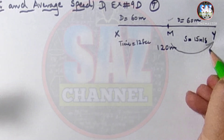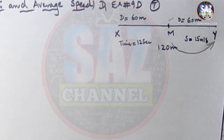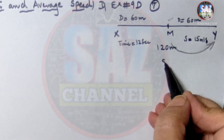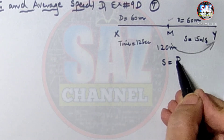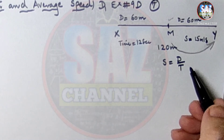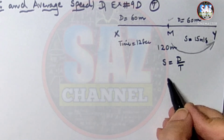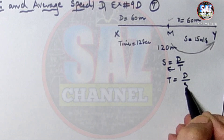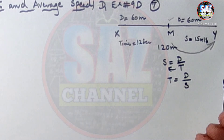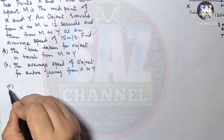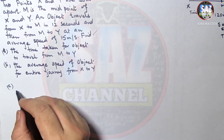Let us focus on the M to Y part of the diagram. The formula for speed is: speed equals distance travelled divided by time taken. So time equals distance divided by speed. It's a very easy calculation — we are given the distance and the speed, so let's move to the solution of part A.